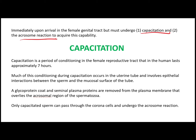Capacitation is a period of conditioning in the female genital tract lasting seven hours. This conditioning occurs mainly in the uterine tubes and involves epithelial interactions between the sperm and the mucosal surface of the tube. During this process, a glycoprotein coat and seminal plasma proteins are removed from the plasma membrane overlying the acrosomal region of the spermatozoa. Only capacitated sperms can pass through the corona cells surrounding the ovum.